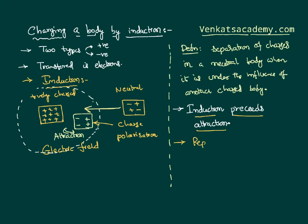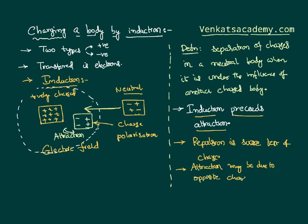Based on this, we can also say one statement: repulsion is the sure test of charge existing on a body. Why? Even if a body is neutral, as we explained, induction can happen between them and then attraction can follow. Just because of attraction, we cannot confirm that the other body is neutral or charged. Attraction may be due to either an opposite charge or due to induction. That is why we say attraction is not a sure test to identify that bodies are charged. Rather, repulsion is the sure test to confirm that two bodies have a similar charge. That is the key point about charging of a body by induction.